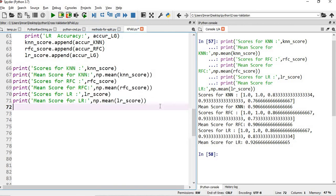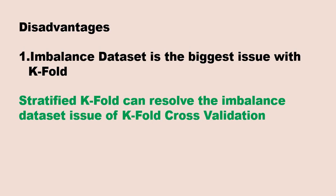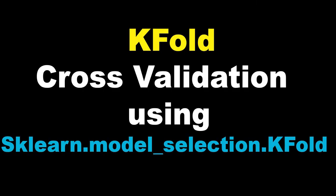This is how we do KFold cross-validation using the KFold function from sklearn.model_selection. One more thing — the disadvantage of KFold is that imbalanced datasets are the biggest issue. If we have two classes and it is not stratified properly, then we have a problem. To resolve this, we will use stratified KFold, which resolves the imbalanced dataset issue. I will also show you how to visualize KFold cross-validation using Matplotlib. Thanks for watching — if you find this video helpful, please press the like button and subscribe to this channel. See you in the next video.